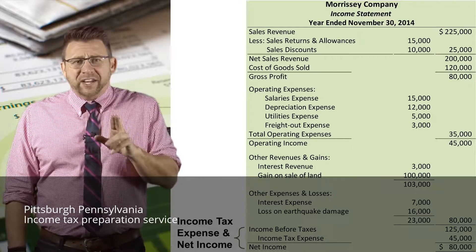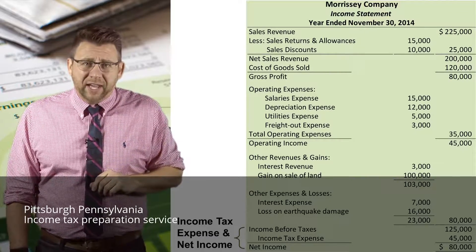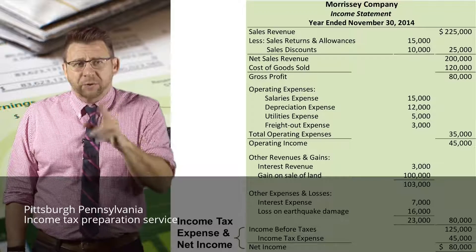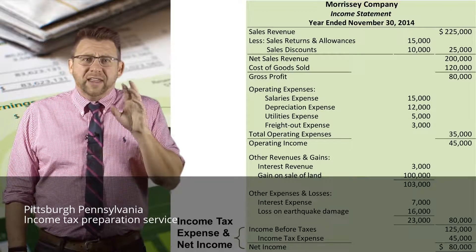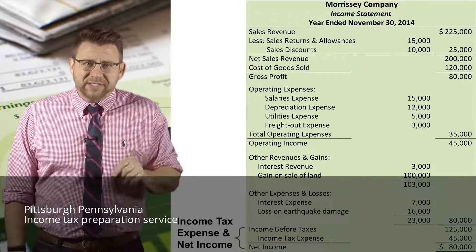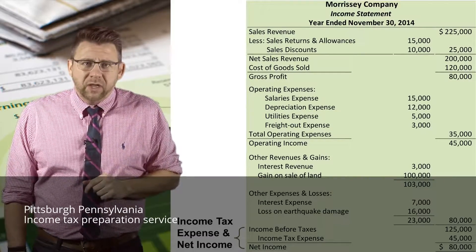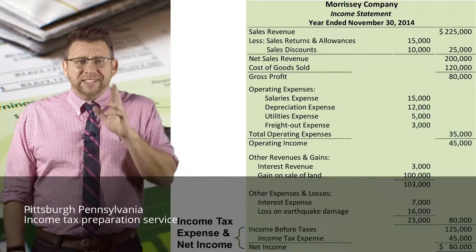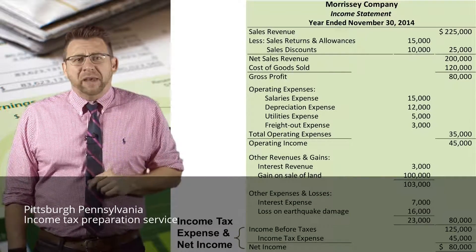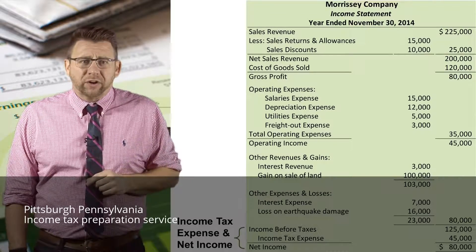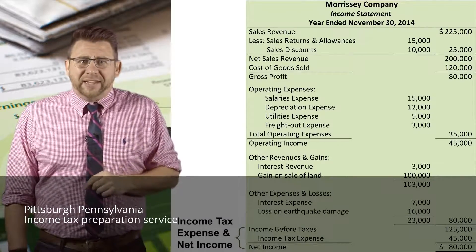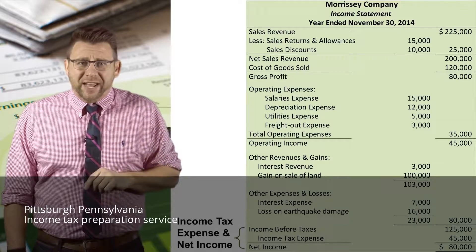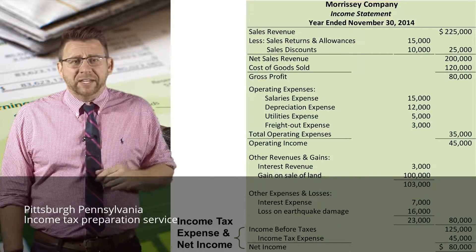The final section before we arrive at net income — or at least the final section for an accounting principles course — is the income tax expense section. This expense is reported separately from all other expenses because it's the expense that managers have the least control over. Income tax expense is deducted from income before taxes to arrive at net income.